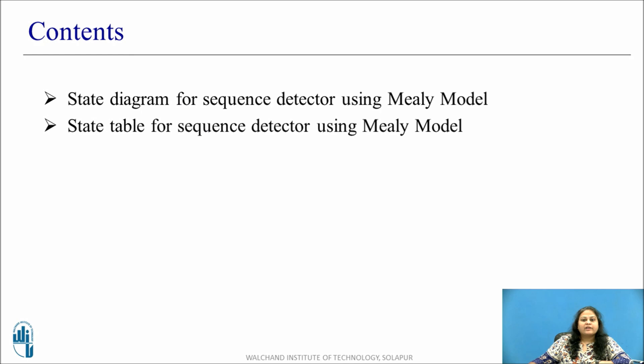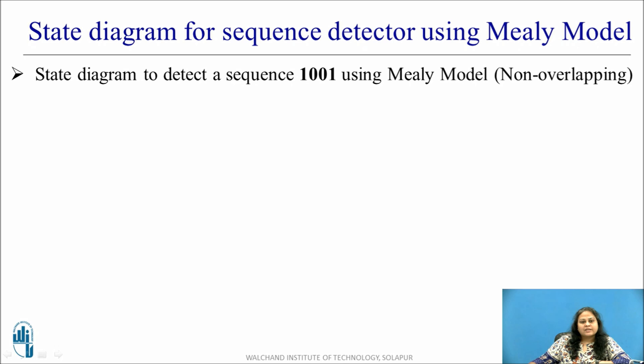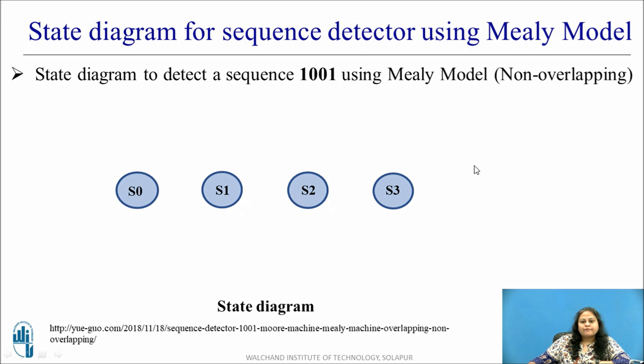These are the contents we will be covering in this session. In the previous session we discussed how to obtain a state diagram and a state table for a sequence detector using Moore model. Now consider the same example to detect the sequence 1001 using Mealy model. Unlike Moore model, the number of states required to detect the sequence here is same as the number of bits in the sequence. Here the number of bits in the sequence is 4, so for the state diagram 4 states are used.